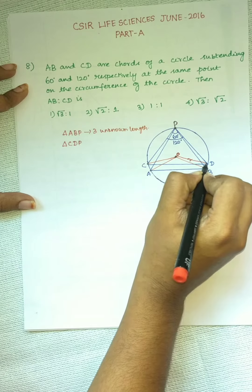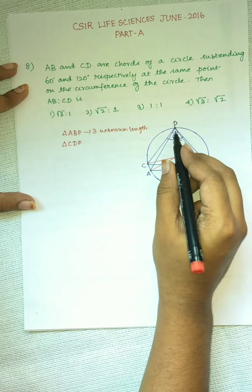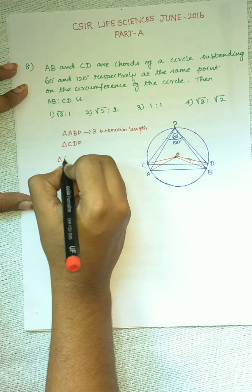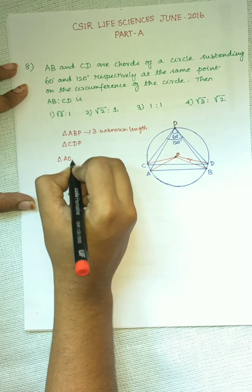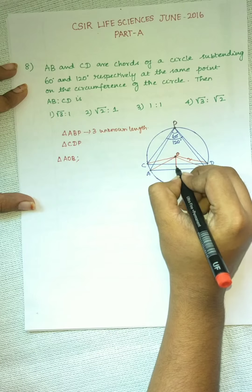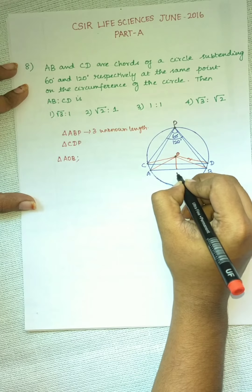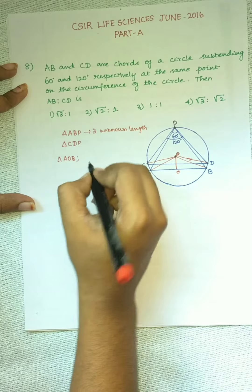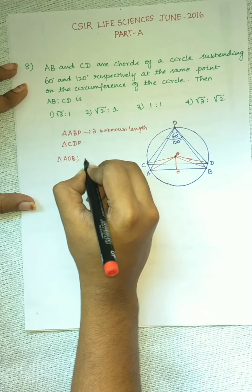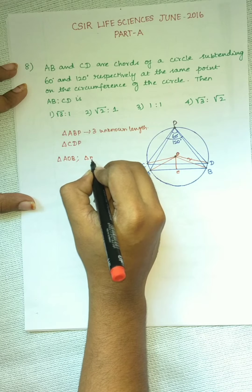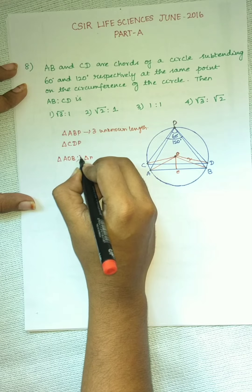Question No. 8: AB and CD are chords of a circle subtending 60 and 120 degrees respectively at the same point on the circumference of the circle. Then AB is to CD is what? So AB and CD are the two chords of a circle and they subtend an angle of 60 and 120 degrees at this common point P.